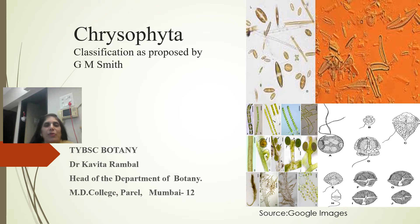Hello students, now we know that G.M. Smith has divided algae into seven divisions, starting with Chlorophyta and ending with Rhodophyta and Myxophyta or Cyanophyta.